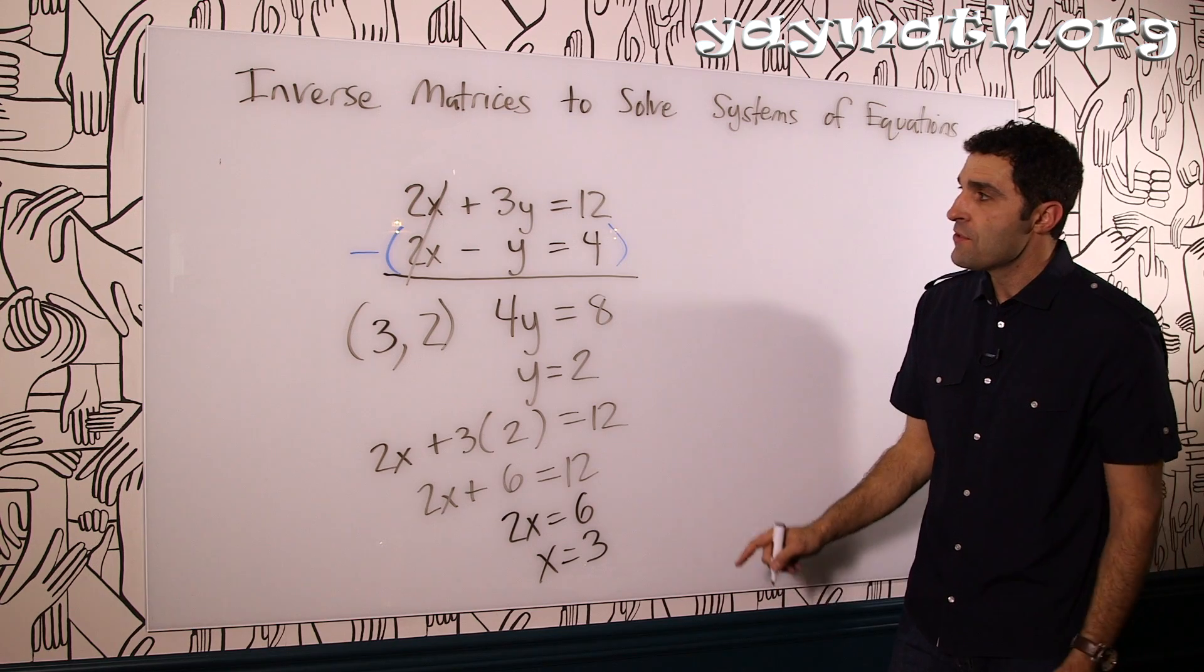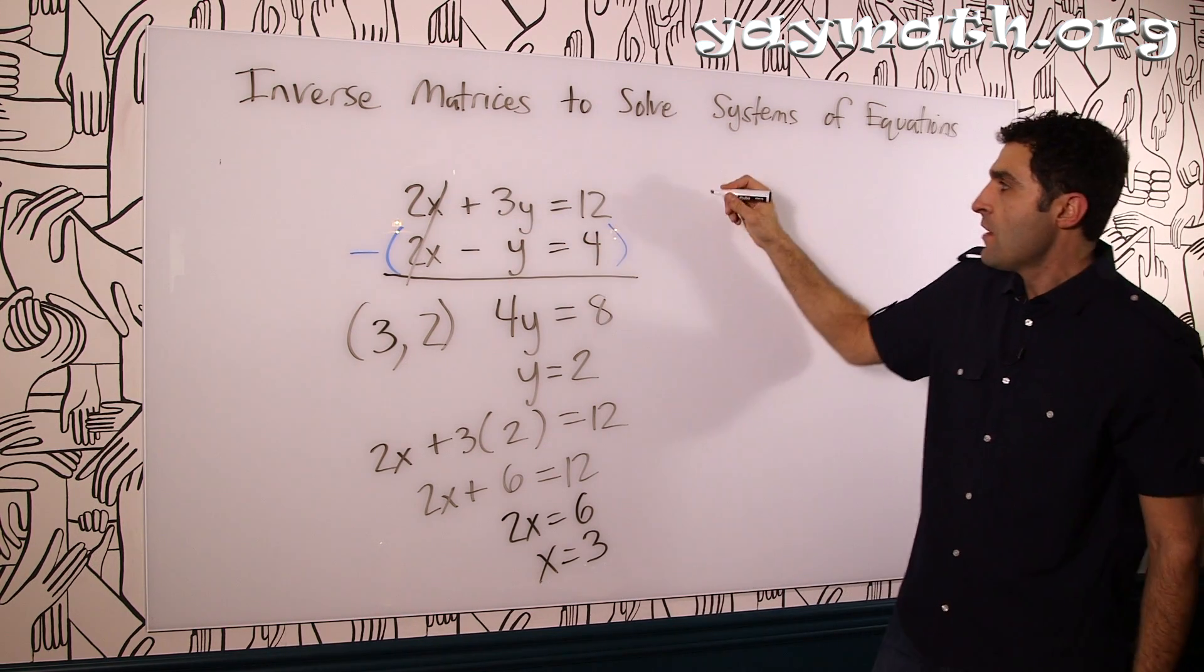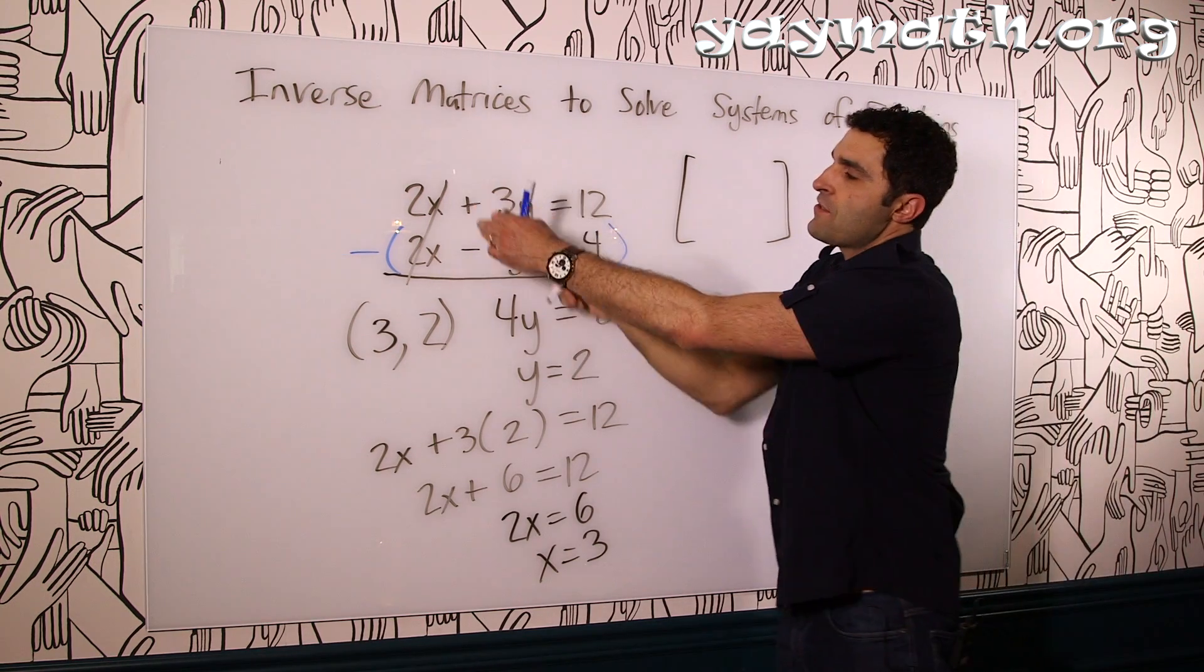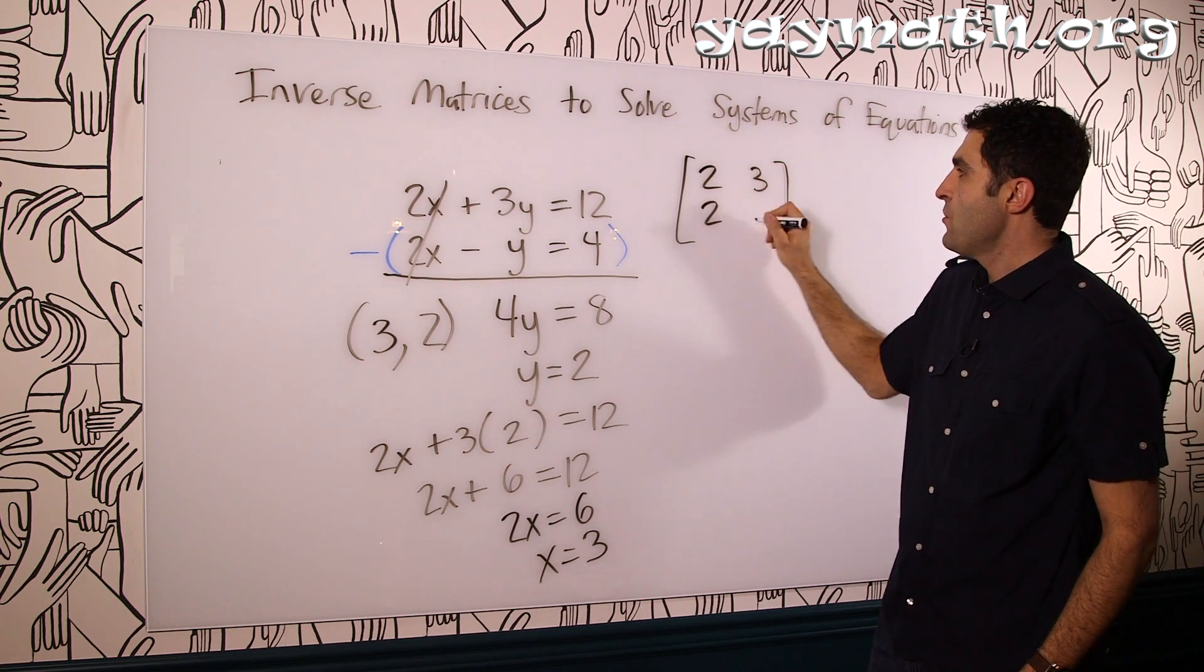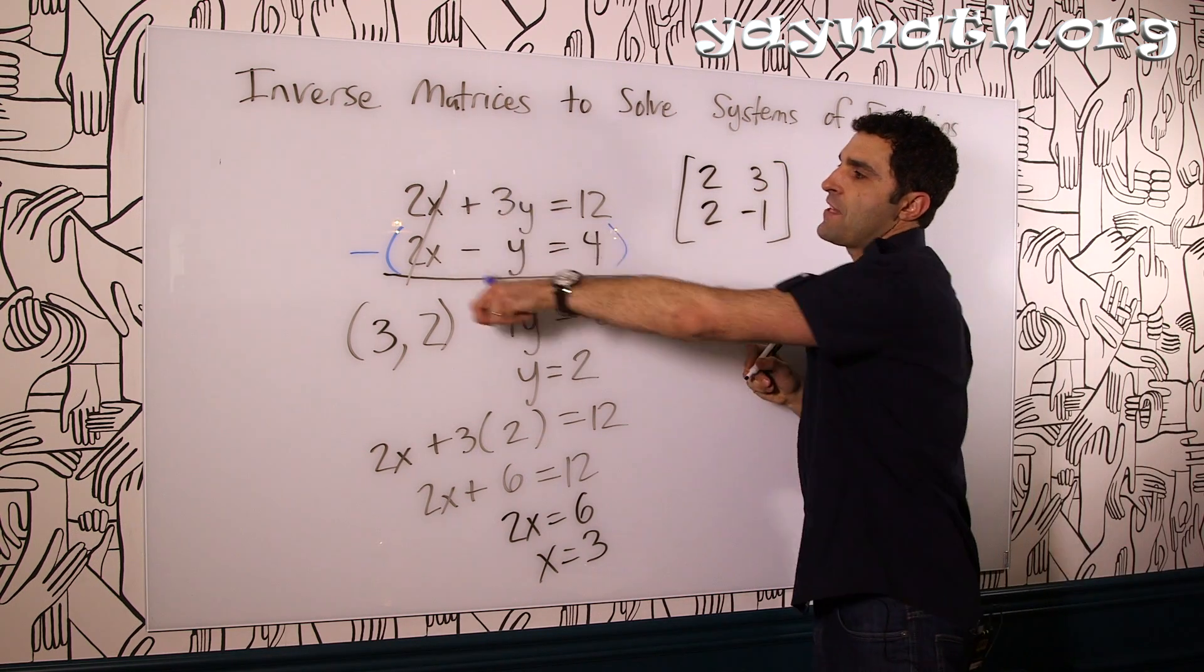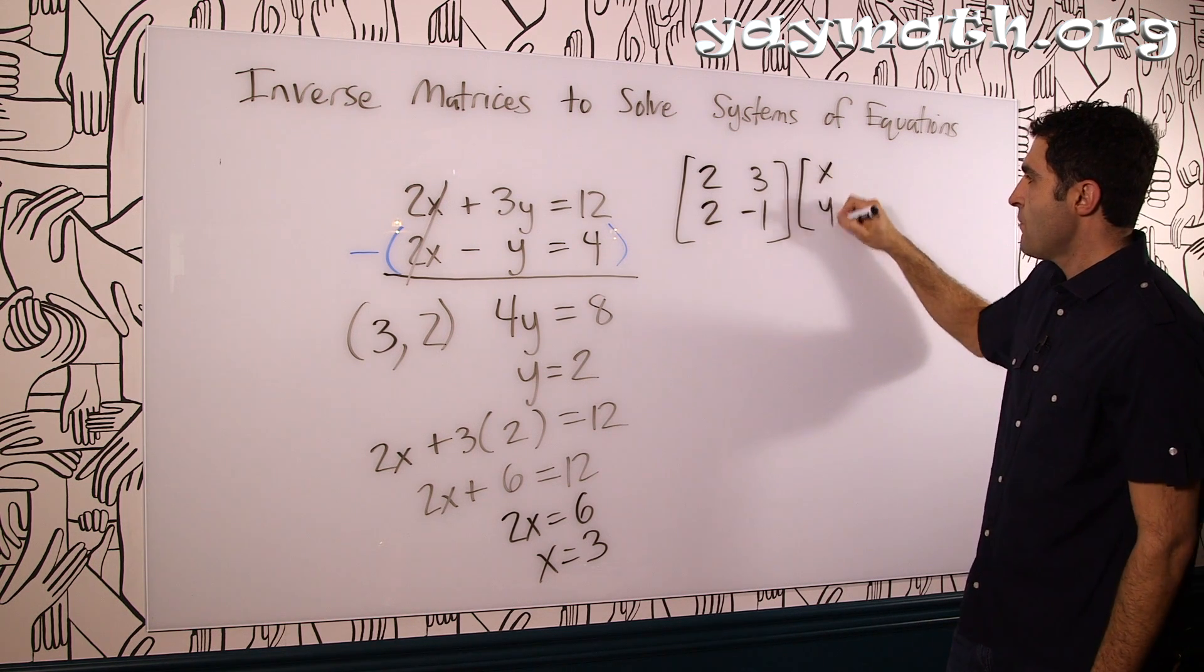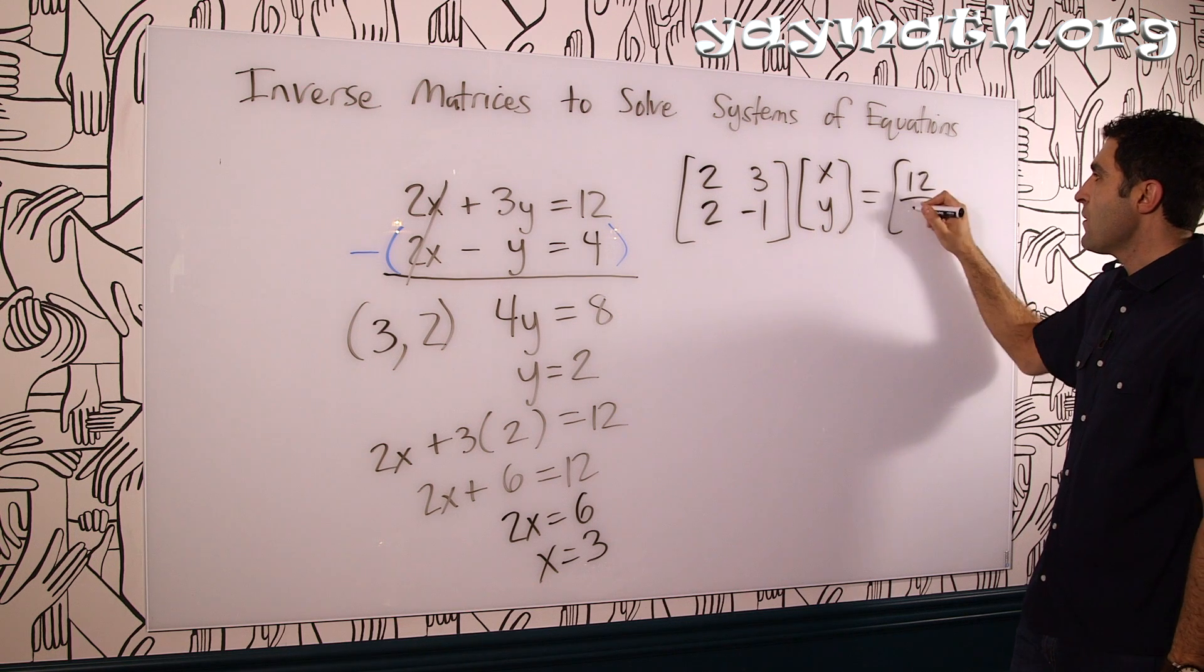Now let's use matrices, specifically inverse matrices, to get us the same solution. In order to do that, we're going to express this system using matrices. So reminder, the matrix is basically a set of data. This is a 2 by 2. We go 2, 3, 2, negative 1. That represents this 2 by 2. Then you can throw in x, y, and that equals the solution, 12, 4.